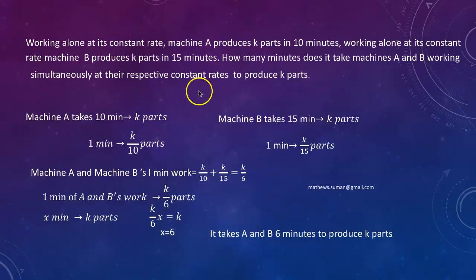The next problem deals with arithmetic. Working alone at its constant rate, machine A produces k parts in 10 minutes. Working alone at its constant rate, machine B produces k parts in 15 minutes. How many minutes does it take machines A and B working simultaneously at their respective constant rates to produce k parts?